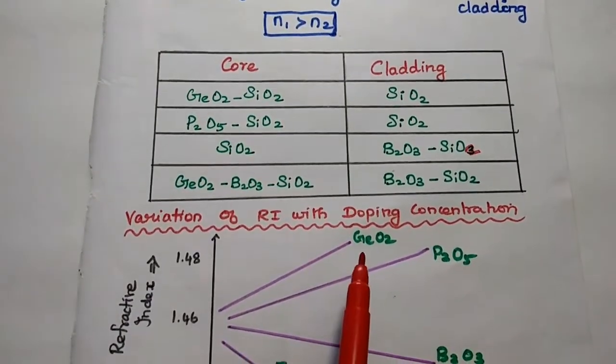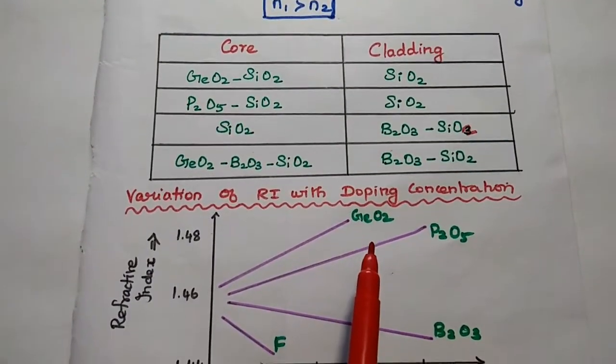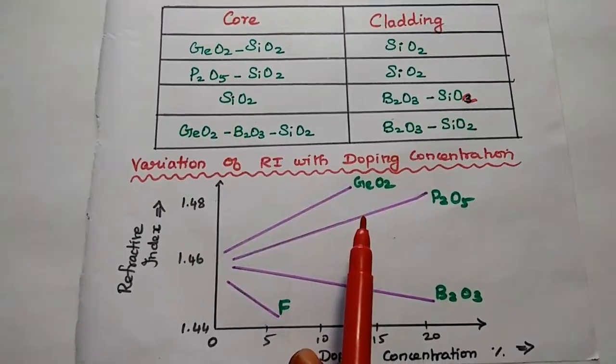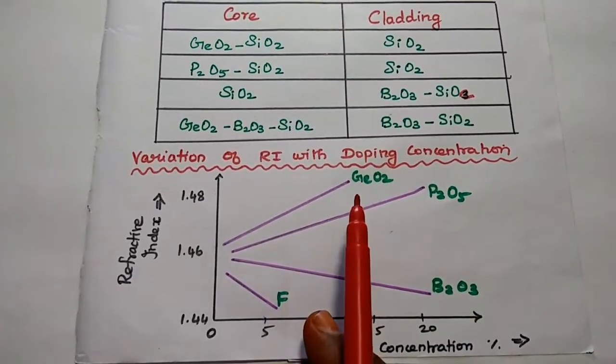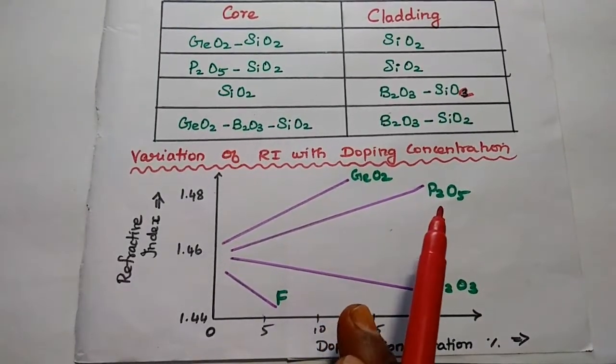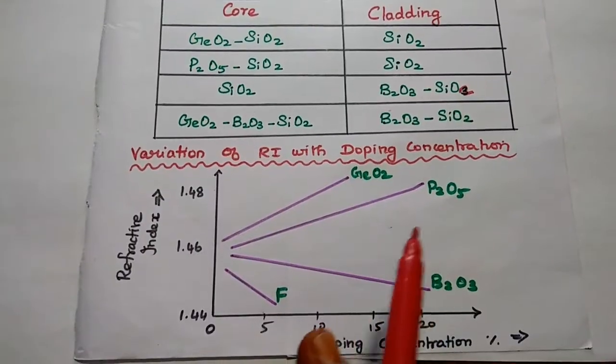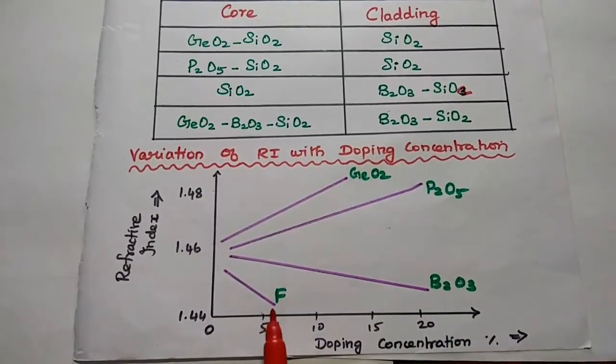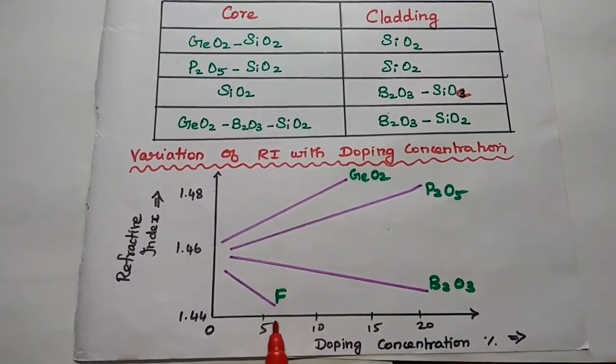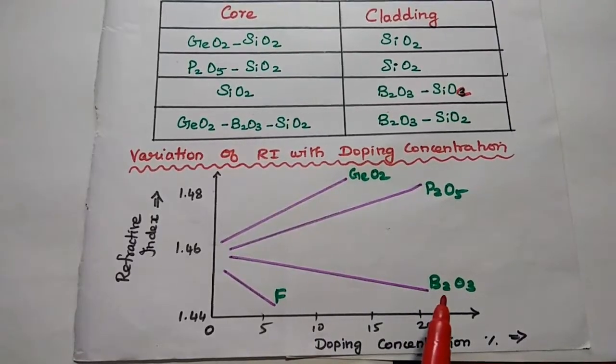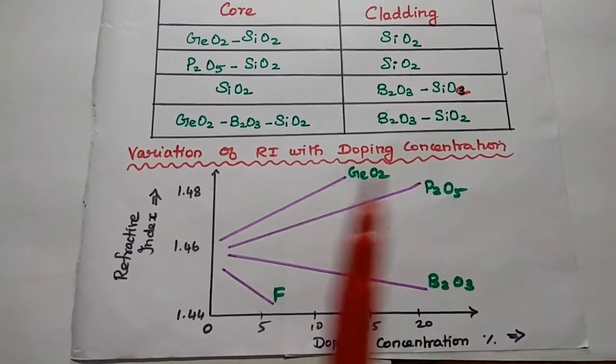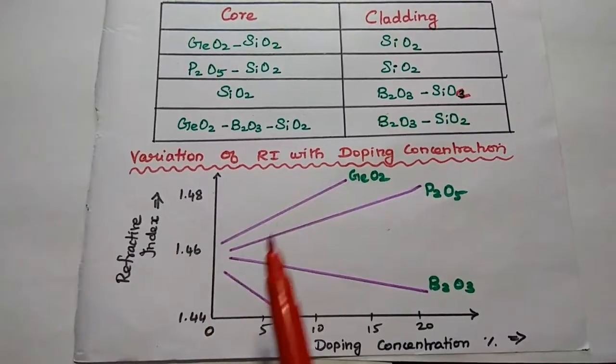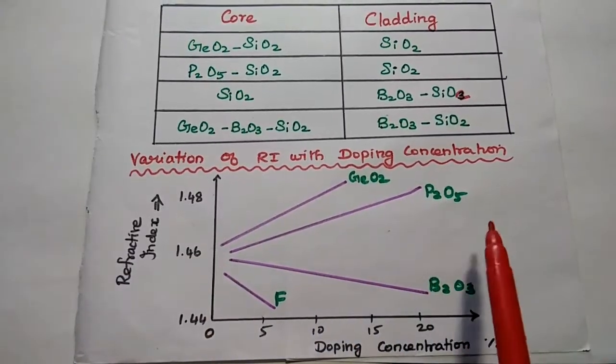So from this, we can come to know that if you want to increase the refractive index, we can add this germanium dioxide and phosphorus pentoxide. If you want to reduce the refractive index, we can add fluoride as well as boron trioxide. So this is the variation of refractive index with doping concentration.